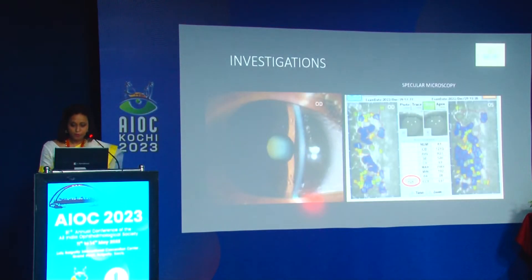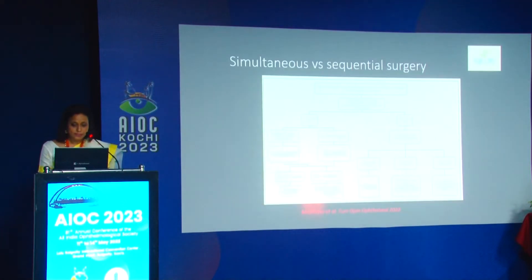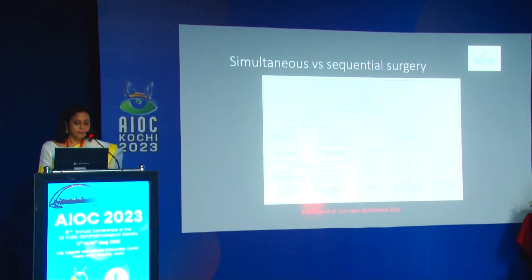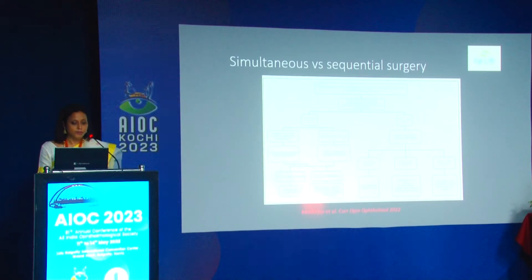How does one approach such a case? There is a paper by Moshirfar et al., published last year, on choosing between simultaneous versus sequential surgery. If central corneal thickness is more than 640 microns, perform specular microscopy: if cell counts are low, a combined procedure is definitely needed; if counts are reasonable, the prognosis should be explained to the patient.